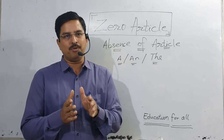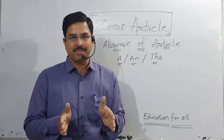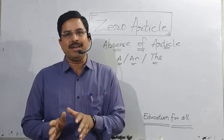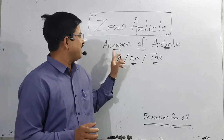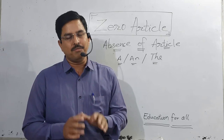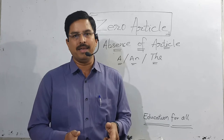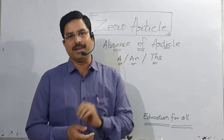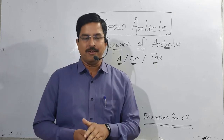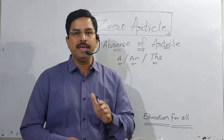Now, about zero article — there are actually only two types of articles: indefinite article and definite article. So what exactly is zero article? This is the absence of article A, AN, and THE. The situations in which no kind of article is used — that is zero article, also called omission of article. In this lecture we will look at all those situations where no article is used.